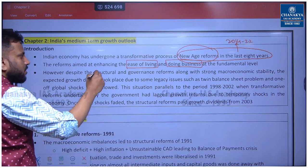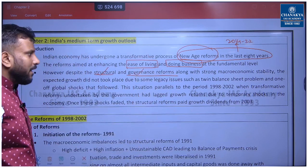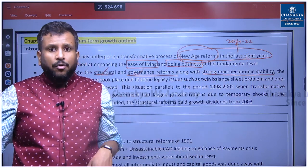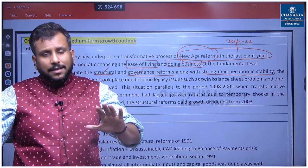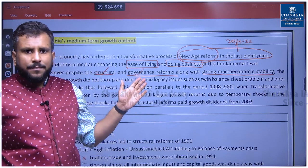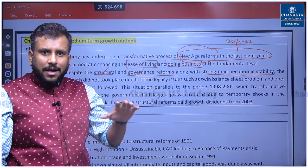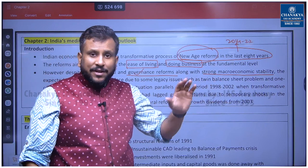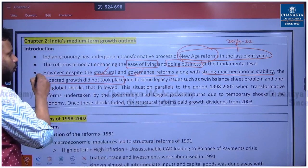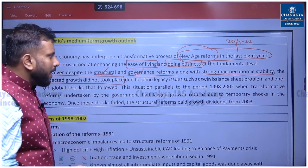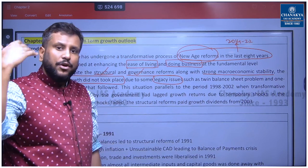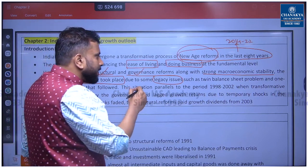However, despite structural and governance reforms along with strong macroeconomic stability — inflation was under control, the current account deficit was fine, the currency exchange rate was stable — the expected growth did not take place. Structural reforms like GST, governance reforms like decriminalizing offenses under the Companies Act, and macroeconomic stability like keeping inflation between 2 to 6 percent — despite all this, the expected growth did not materialize, due to some legacy issues.